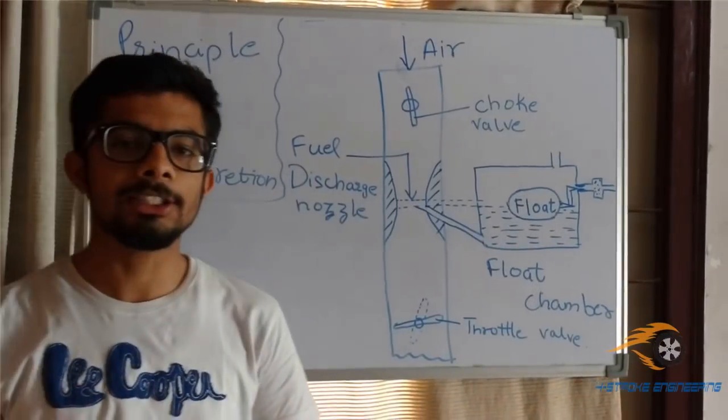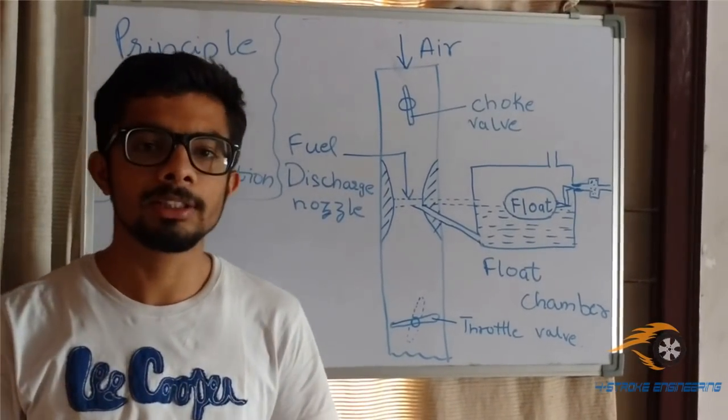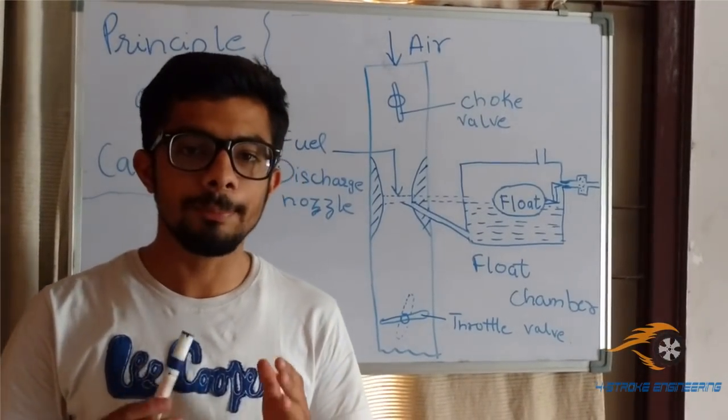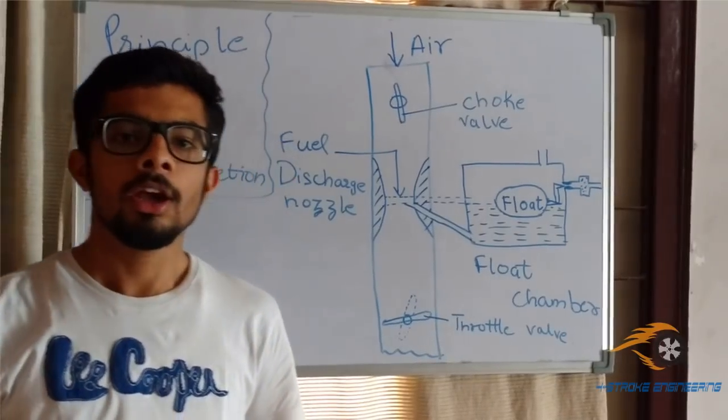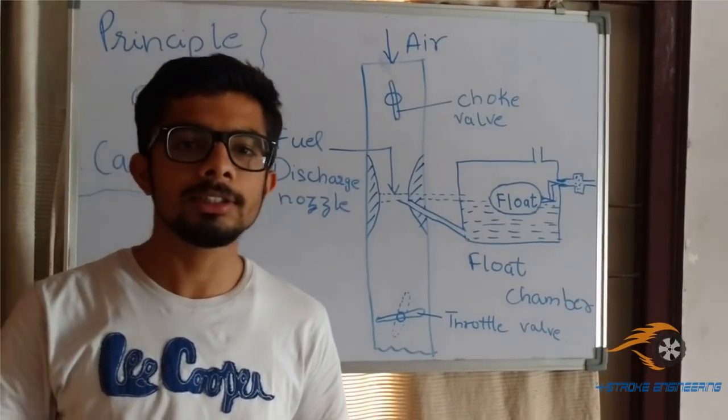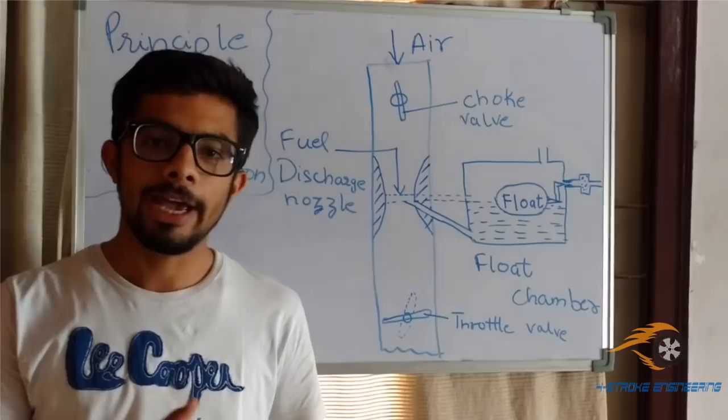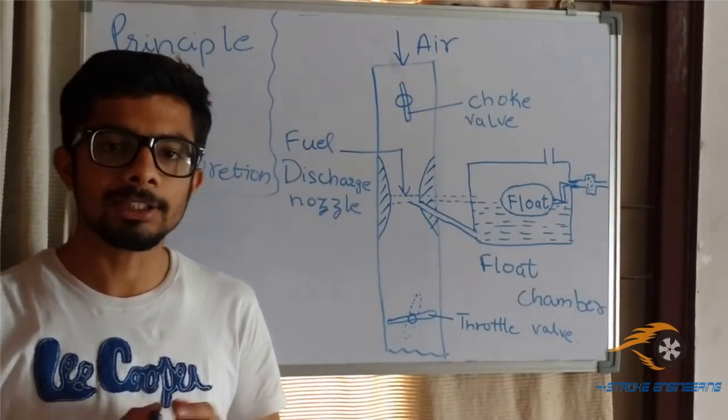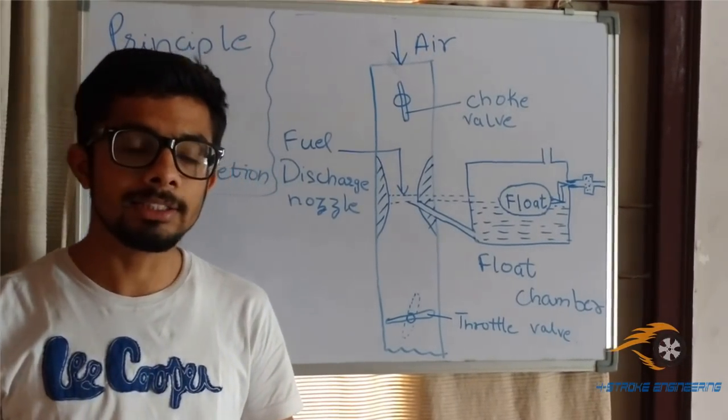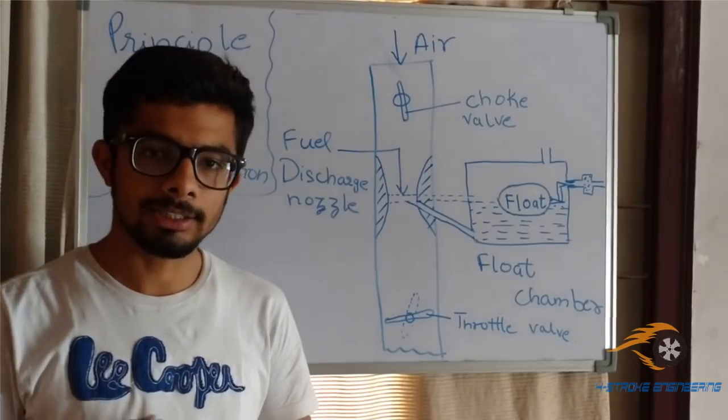Last time we learned about the different ranges of throttle applied in automobiles. Today I'm going to teach you the basic principle of carburation. You all must have known that carburation is a simple process of mixture of air and fuel that later passes into the combustion chamber. Well, there is a very vast process as I'm going to tell you today.